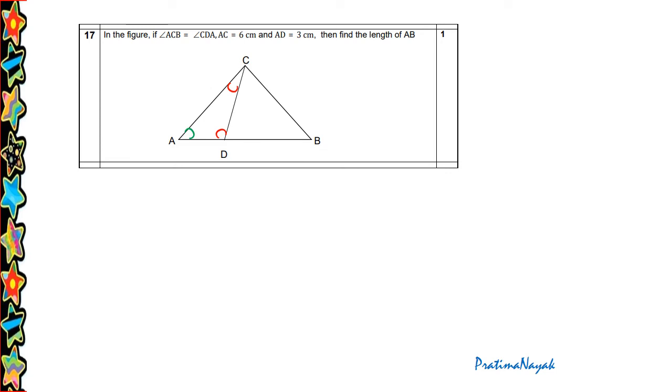Now angle A is common. So by AA criteria, triangle ACB is similar to triangle ADC. So AC upon AD equals AB upon AC. Now AC equals 6. So putting the value, AB equals 6 times 6 upon 3. That will be 12 cm.